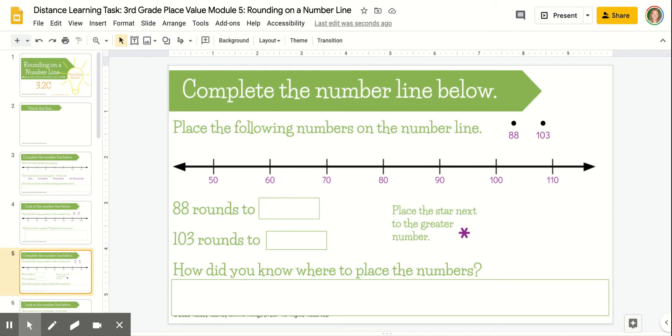Next, we're going to move on to placing numbers on the number line and using that number line to round the number to the nearest multiple of 10. Once you place, we'll do one as an example. This is the number 88.